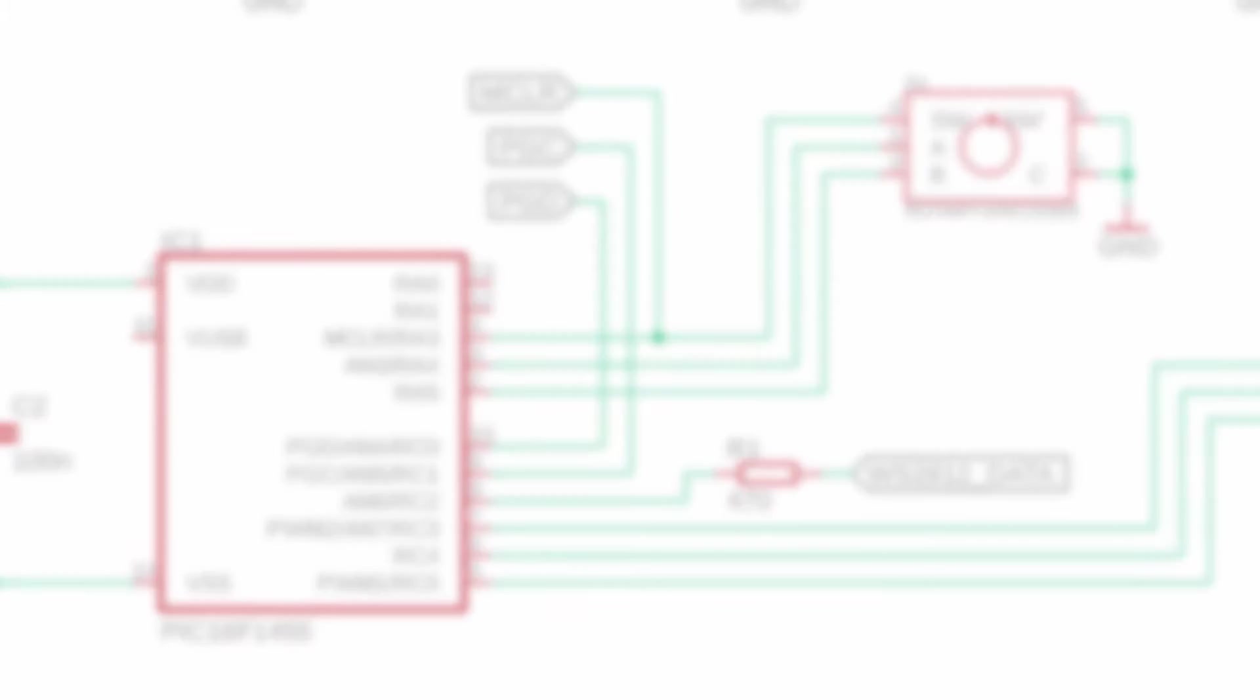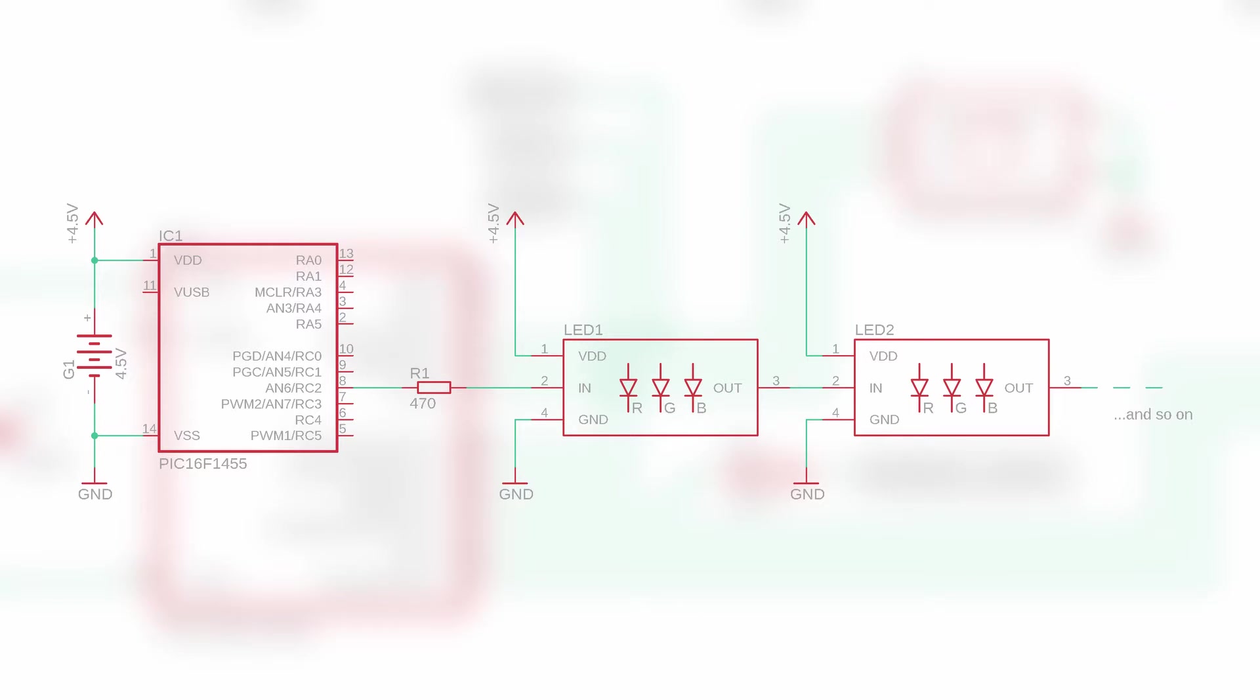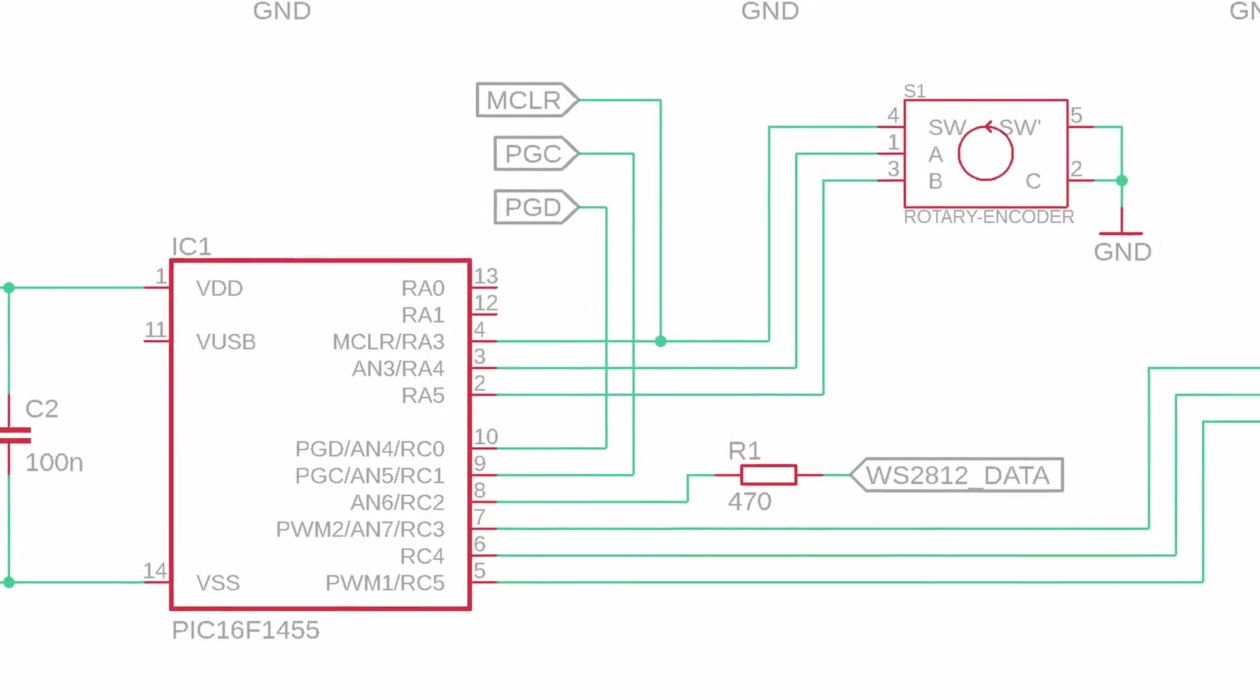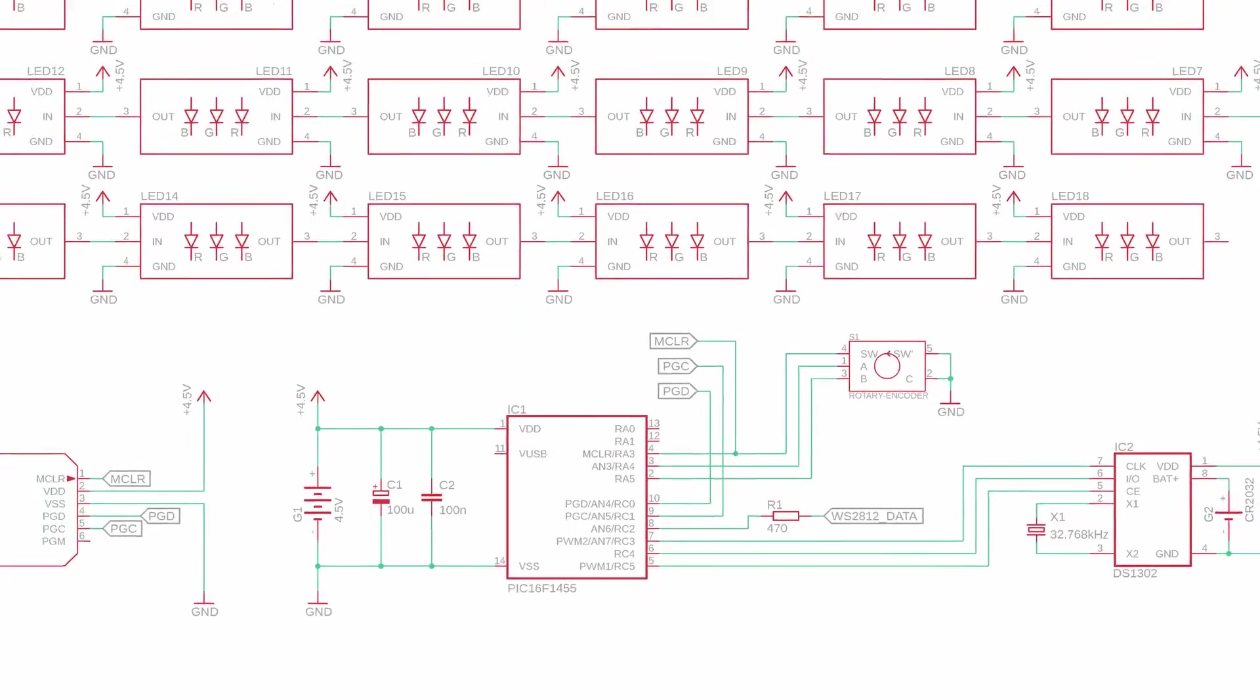First off, this 470 ohm resistor is there to protect our PIC. The PIC sends out the LED data from pin RC2 down here. Usually the input pins of the WS2812 NeoPixel LEDs are high impedance, but when all LEDs are turned on the circuit draws a lot of power which can make the supply voltage go down in some places of the circuit. If that happens, a small current can flow into the PIC and this resistor basically limits that current to a non-lethal amount.